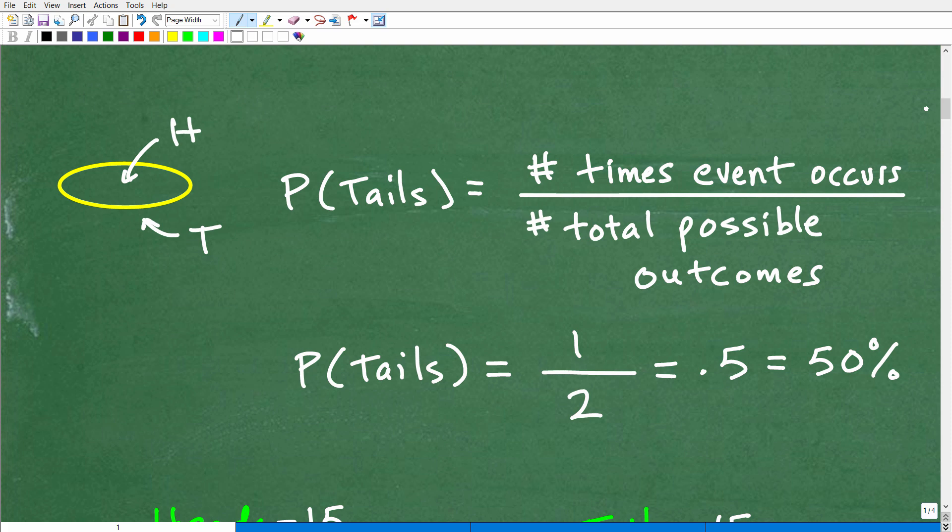All right. So first of all, we want to define the basic definition of probability of an event. So here is our fair coin. Here's heads. Here's tails. So the probability of this coin coming up tails, this is what we call the theoretical probability.